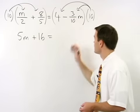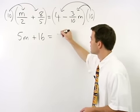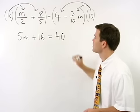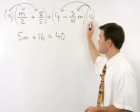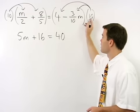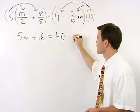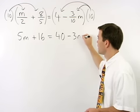On the right, 10 times 4 is 40. And when we multiply 10 times negative 3 tenths m, our tens cancel, and we're left with negative 3m.